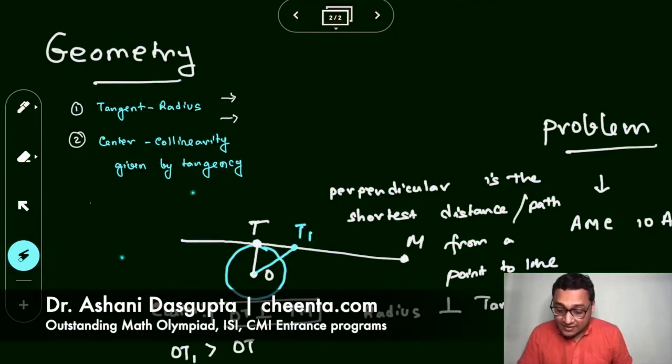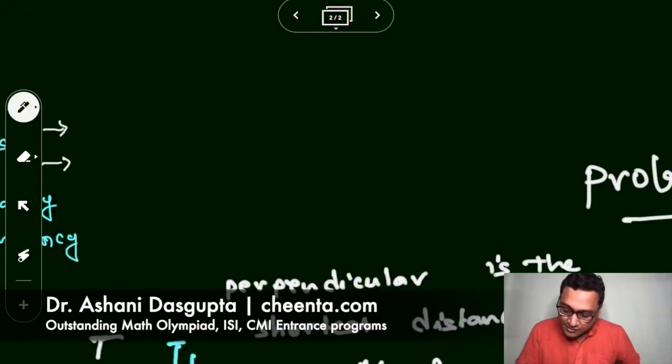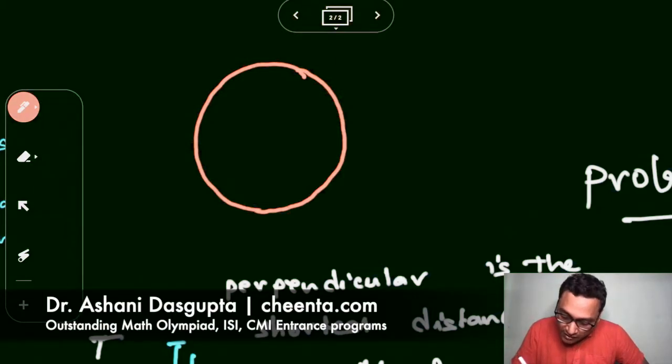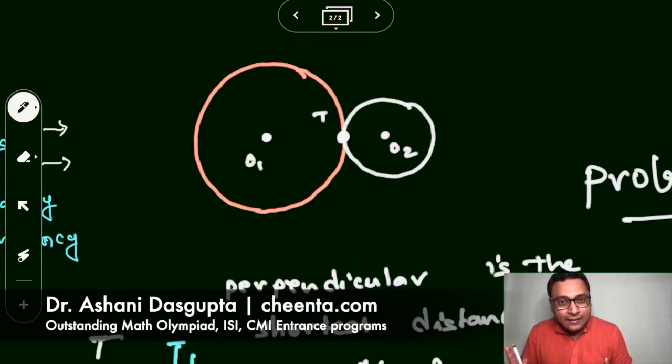Now the other fact, that center collinearity is given by tangency, what is this? This is a very useful idea. So if you have two circles which are tangent to each other, that is the circles are touching each other at exactly one point, we will show that the center of the two circles, O1 and O2, and the point of tangency, let's say T, they all lie in the same straight line. Seems like a very easy thing, but again we are interested in the proof. So what we will do is we will do a construction. We will draw the tangent line, a line that is tangent to both the circles.